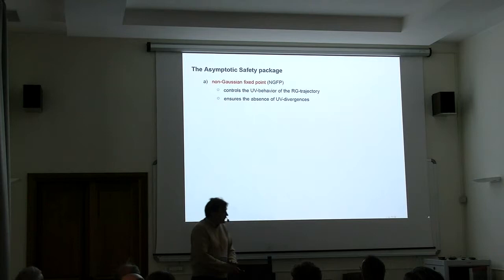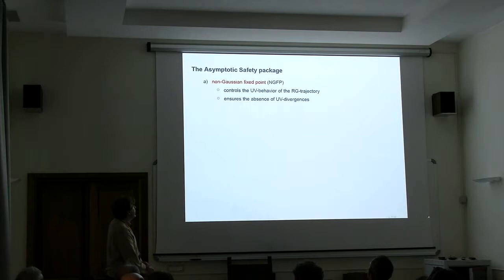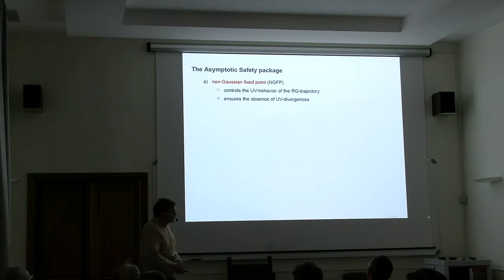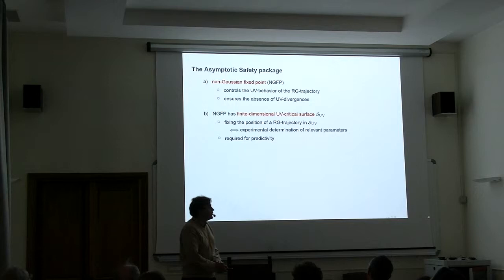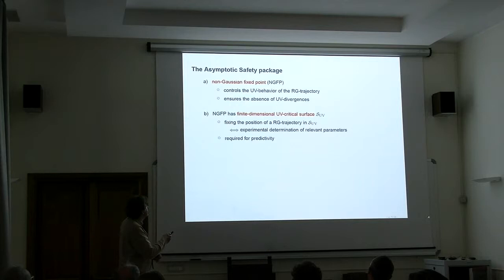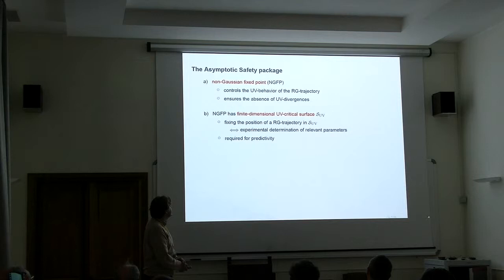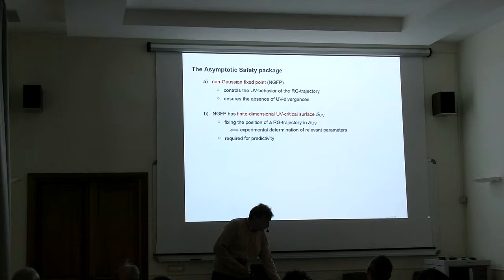So the asymptotic safety package, what do we need? First, we need a fixed point of our RG flow which controls the theory at very high energies. In this way we can get rid of UV divergences. Then we want the construction to be predictive. This is encoded in the properties of this fixed point. Essentially, we want to have a situation where only a finite-dimensional set of RG trajectories approaches the fixed point as we go to very high energies. Then we can pinpoint the trajectory in the surface by doing a finite number of measurements, and from that we can predict actually an infinite number of coupling constants.